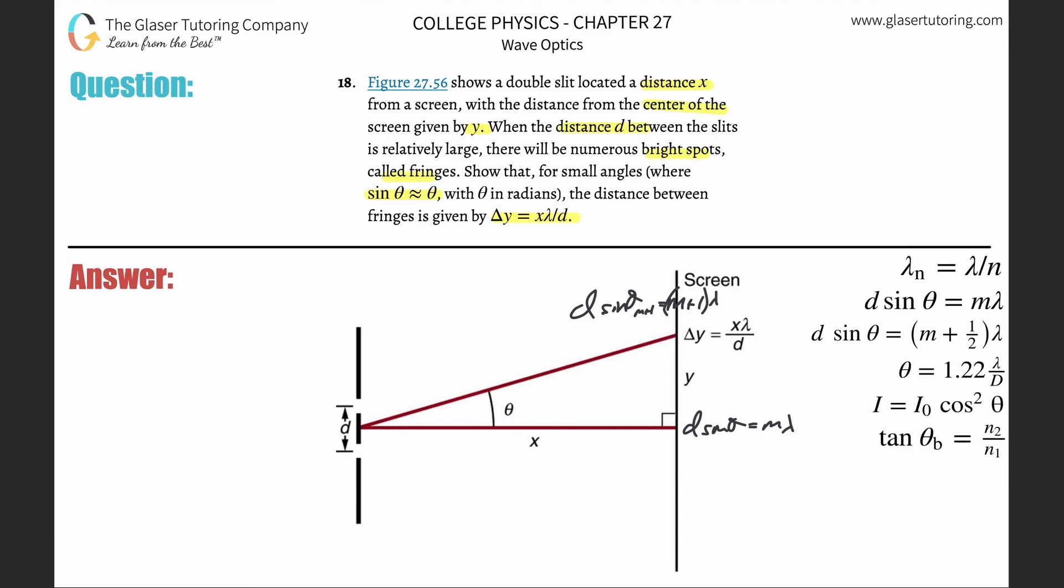So in order to find the distance between these two points, I can basically subtract these two equations from one another. When I do that, it's going to be d sin(θ_m+1) minus d sin(θ_m) will then be equal to (m+1)λ minus mλ.